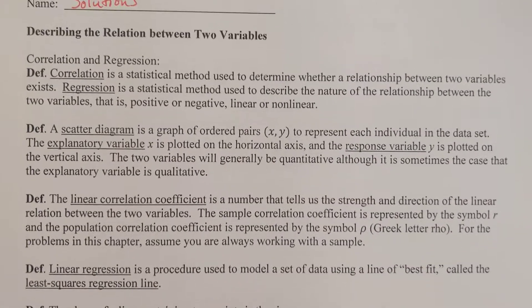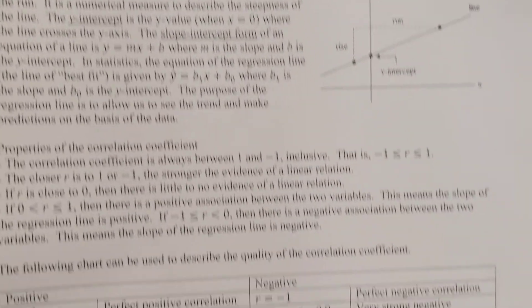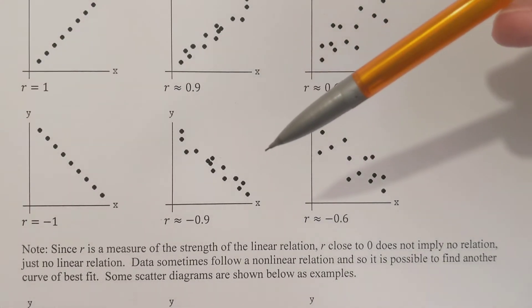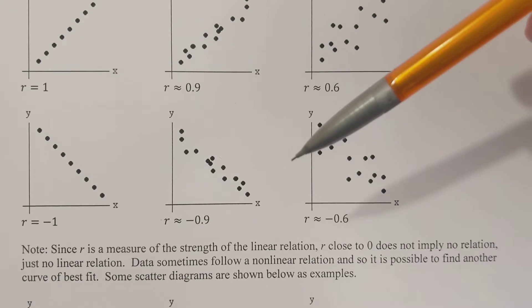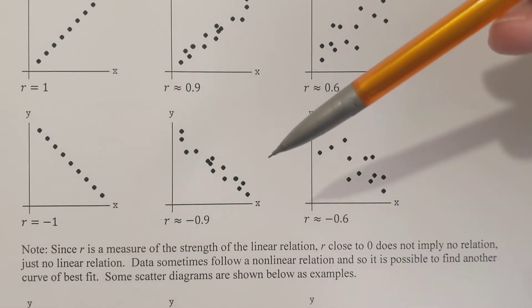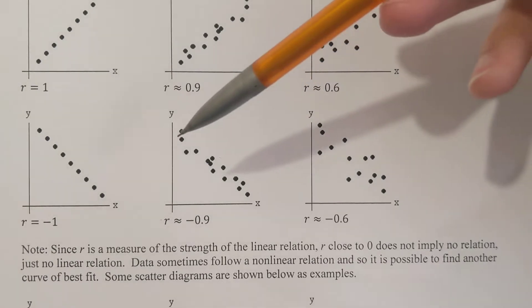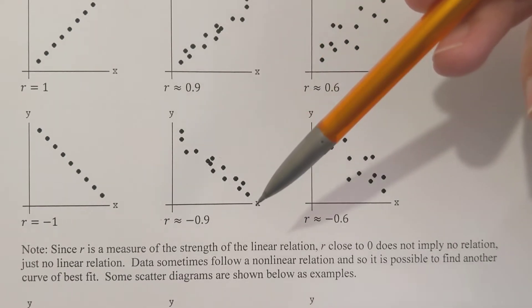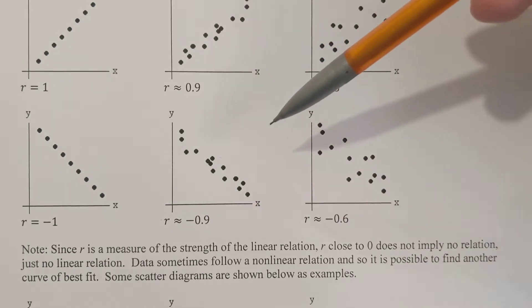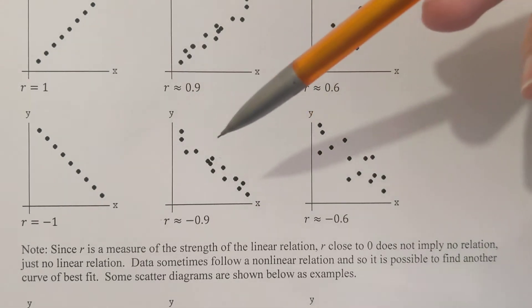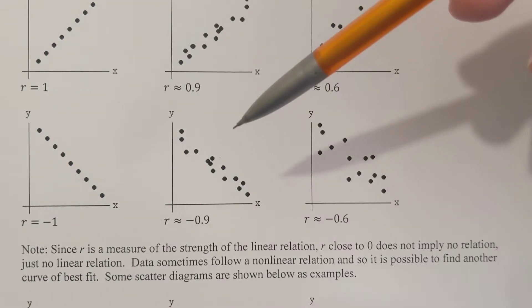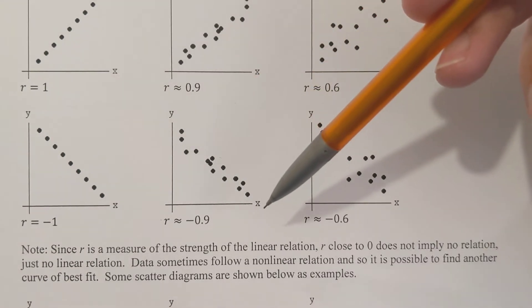The thing that we're studying is linear regression. What that is — you're going to make a scatter diagram, plot points x, y like you would in an algebra class. Then you're going to draw a line that best fits the data. The regression line is the best fit line; there's only going to be one line that is the best fit for everything.